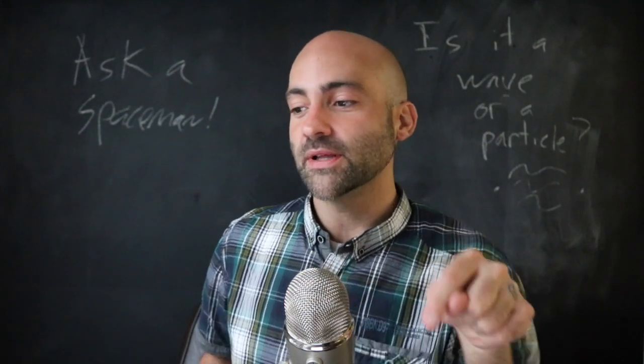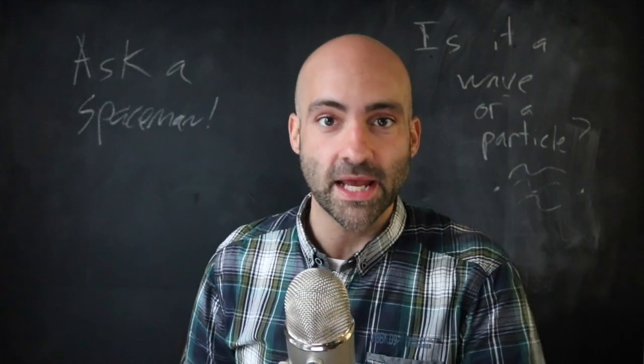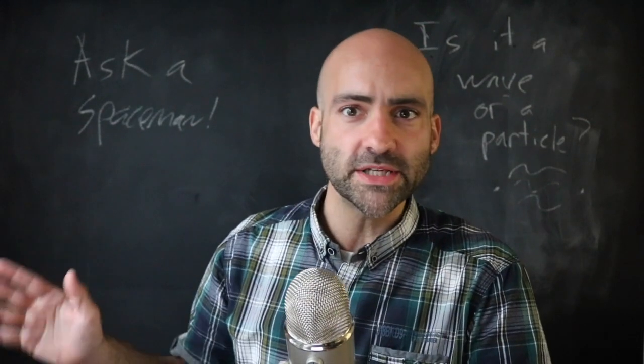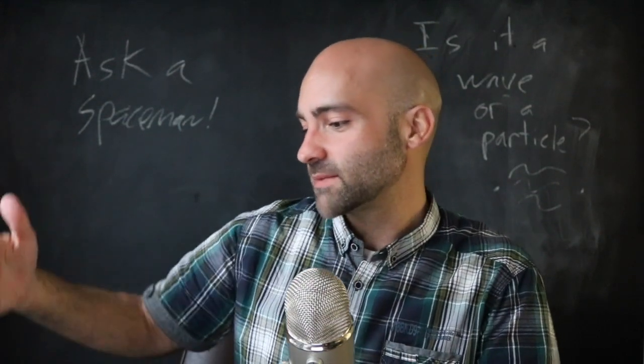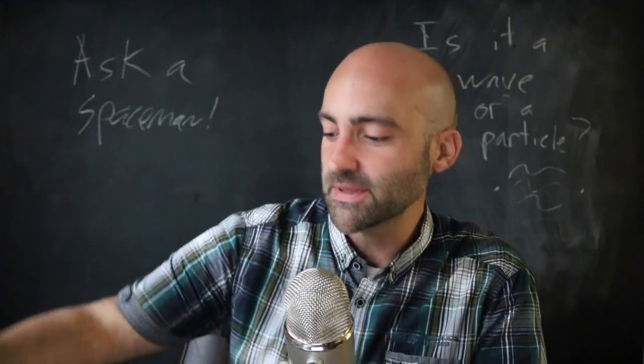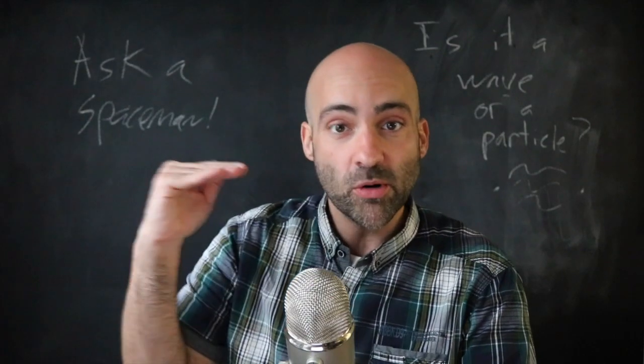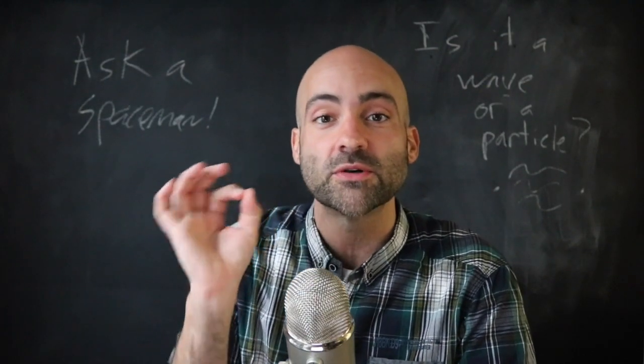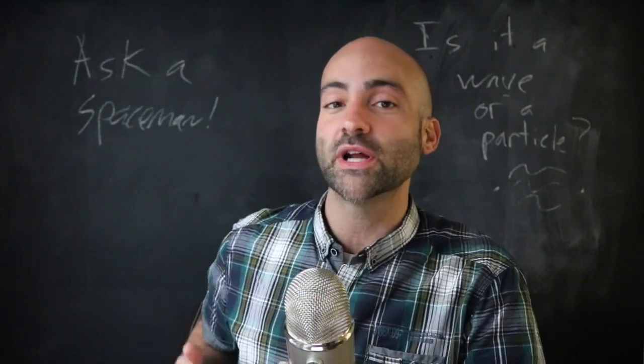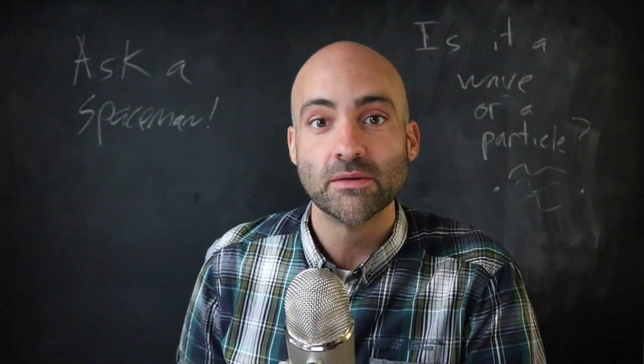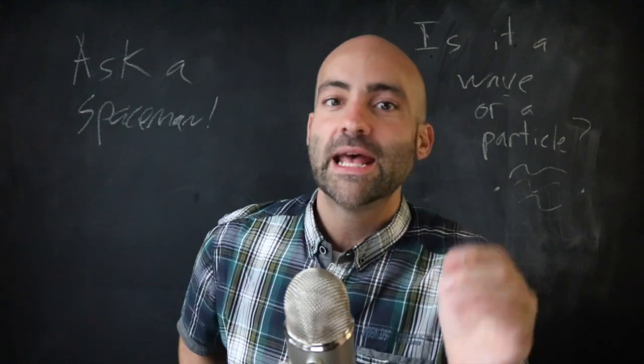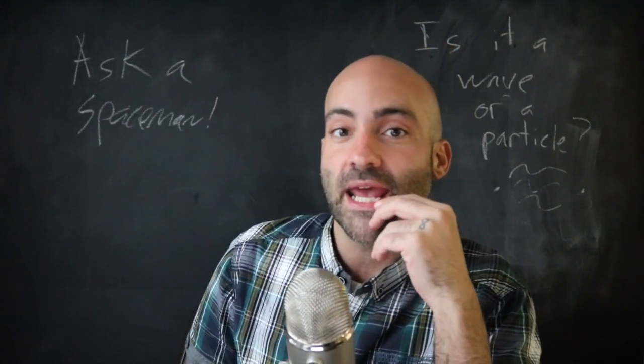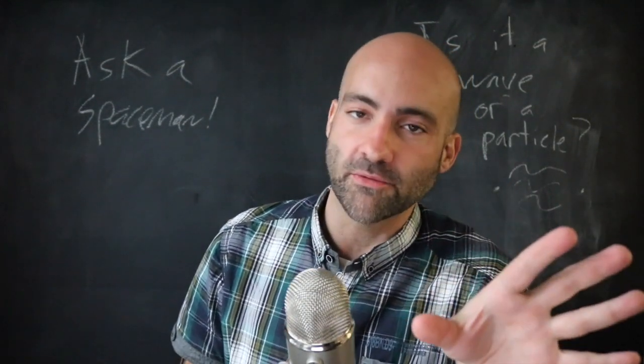So the mathematics of quantum mechanics is perfectly straightforward. It describes behaviors, makes predictions, tells you what experiments will happen as crystal clear as you could possibly make it. But then when we try to talk about it, when we try to translate these equations into a bunch of words, things get a little messy and they get especially messy in a lot of ways.